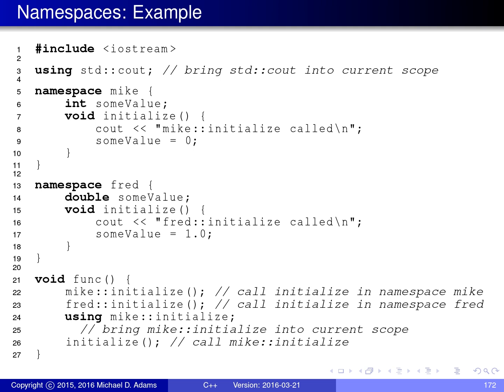On this slide, I have a code example that introduces two namespaces called Mike and Fred. To begin with, I have a using statement: using std::cout. What this does is bring the identifier cout from the namespace std into the current scope, so below I don't have to keep typing std::cout — I can just type cout.